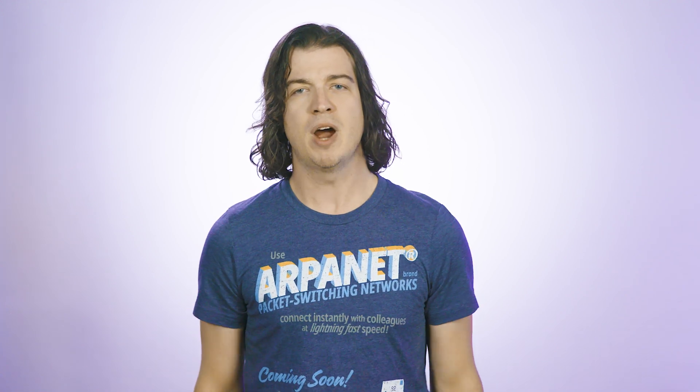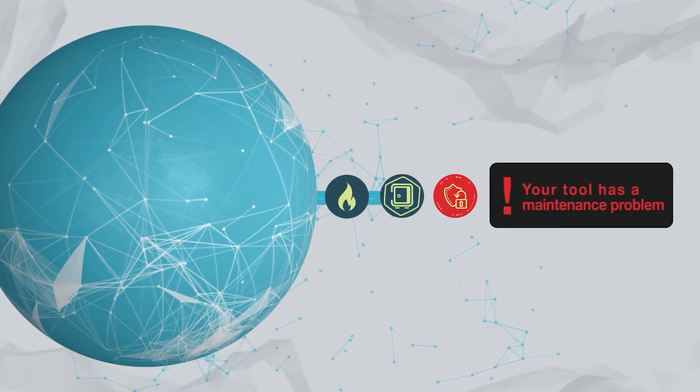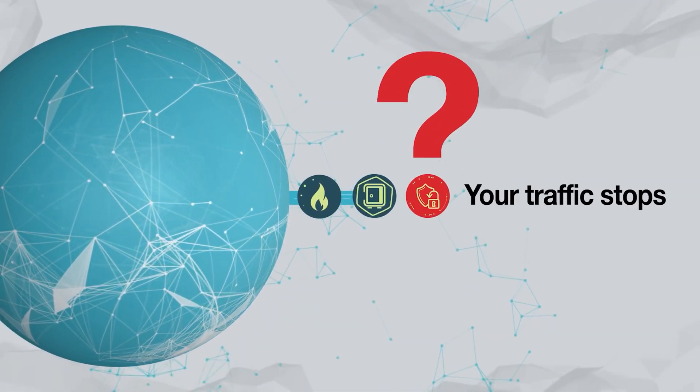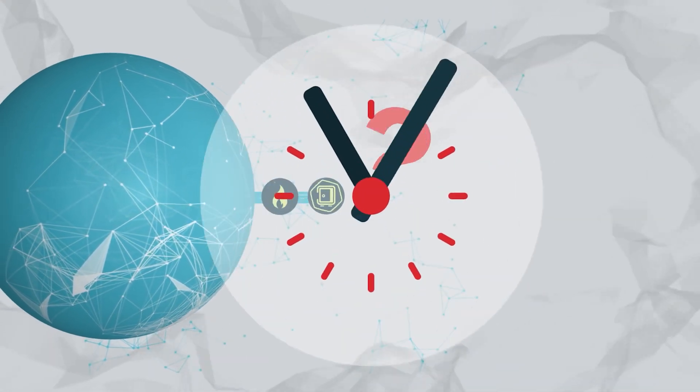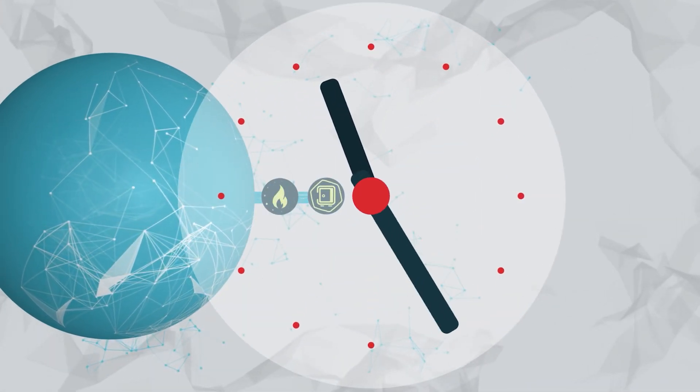Well, when it comes to your network and the applications you rely on, downtime is simply unacceptable. It deprives your staff of business-critical systems while infuriating your end users and customers alike, essentially grinding your business to a screeching halt. But therein lies the problem. With your tools deployed inline, if any one of them stops responding and forwarding traffic, then it's going to disrupt that entire network segment.